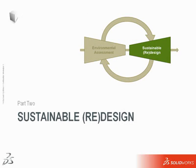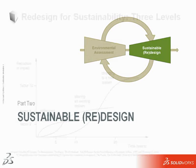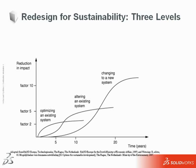Now that you've seen our approach to environmental assessment, let's explore how SolidWorks Sustainability can help you design or redesign a product to be more sustainable. There are three distinct levels of redesign, relating to the product system, that describe the degree of environmental impact reduction possible. For example, a factor 2 reduction means cutting the impacts by half; factor 5 would be a five-fold or 80% reduction. The three levels are optimizing an existing system, altering an existing system, and changing to a new system.